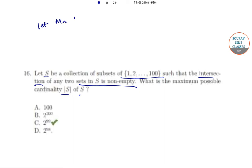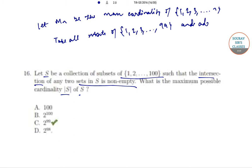Now let M_n be the maximum cardinality for n elements of {1, 2, 3, ..., n}. Take all subsets of {1, 2, 3, ..., 99} and add 100 to each of them. Therefore, we can have 2^99 subsets.